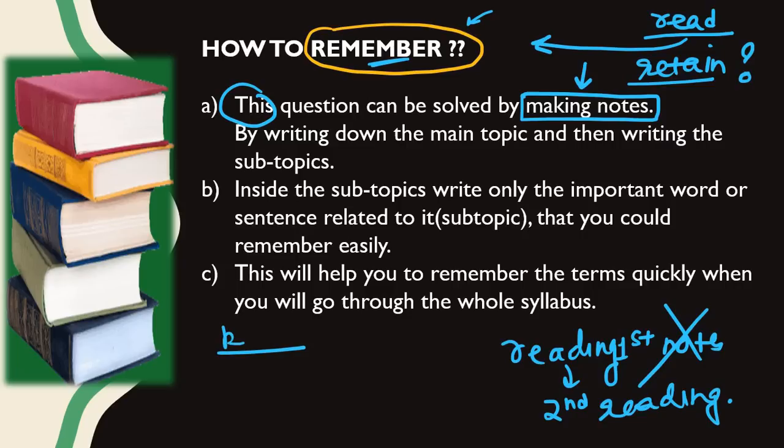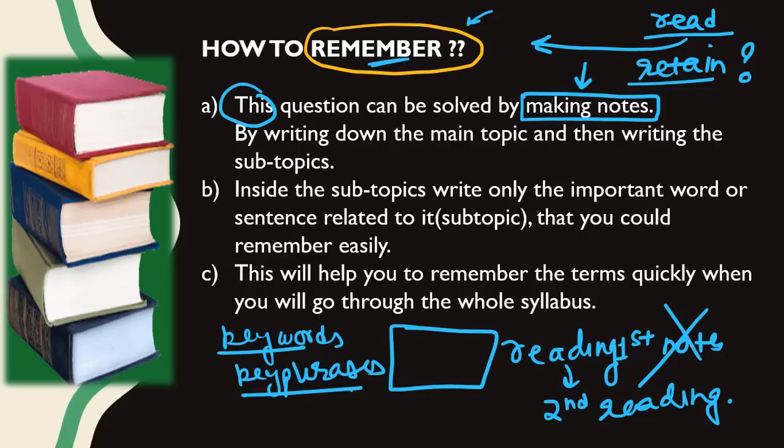In the first reading, just underline the keywords and key phrases. You can make a box around important points. When you start the second reading of this book or chapter, you will know what was important so you can save time.